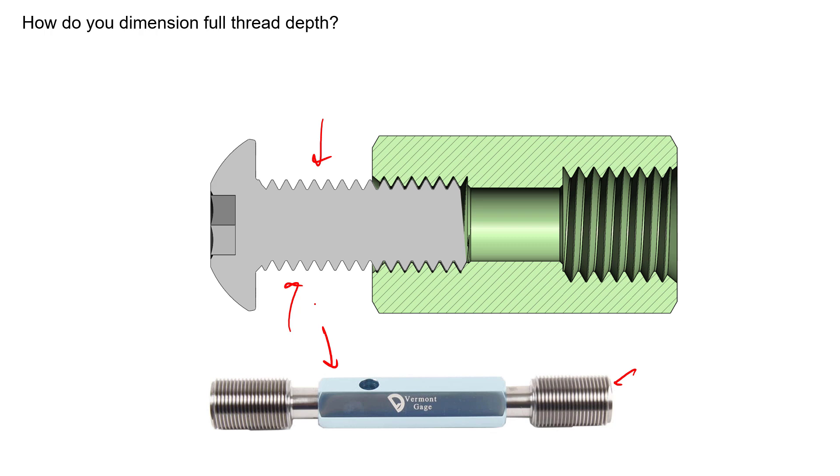They'll thread that into the feature, measure how much of that tool is sticking out above the surface, and subtract that to get their minimum thread depth that they've acquired in that inspection.